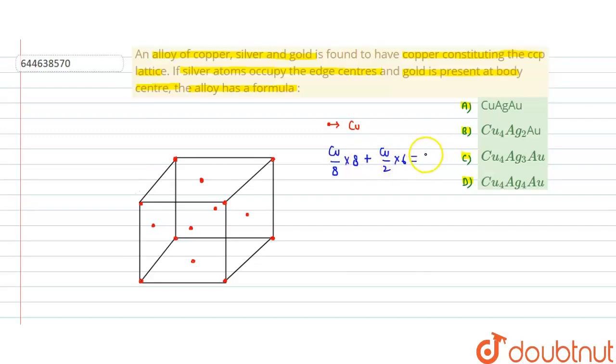This is 1 plus 3, so this is 4 Cu. That means from here we can say that the Cu molecules are 4, so 4 Cu.